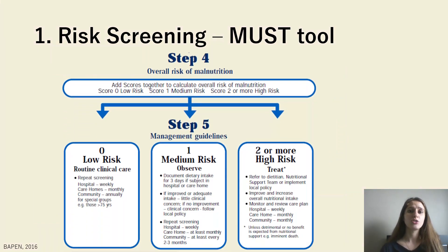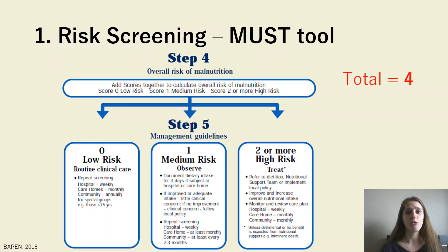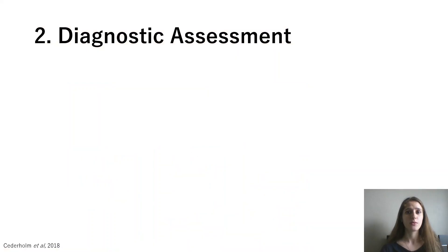Moving on to step four, this is where we add up the scores from steps one, two, and three, which were zero, two, and two, giving us a total score of four. Moving to step five, you can see that this means she is at high risk and she should be treated. Knowing that she is a high-risk patient, we can move on to the diagnostic assessment.